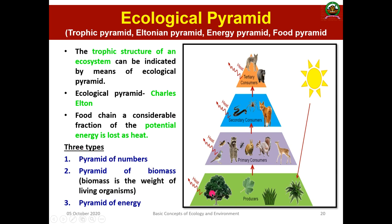Pyramid of number refers to the number of organisms at each trophic level. Pyramid of biomass refers to the weight of individual organisms at each level. Pyramid of energy refers to how much energy is transmitted from one trophic level to the next — from primary producers to primary consumers to secondary consumers to tertiary consumers — with energy decreasing and much being wasted as heat at each level.